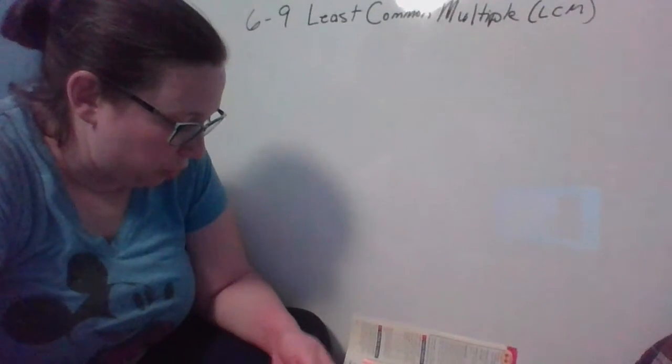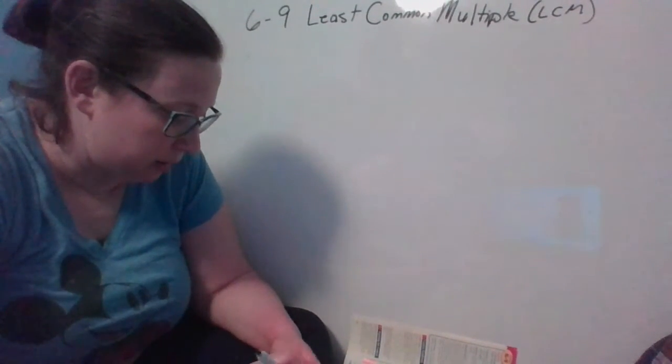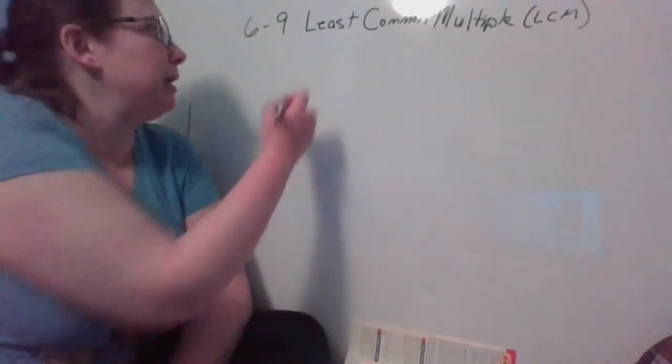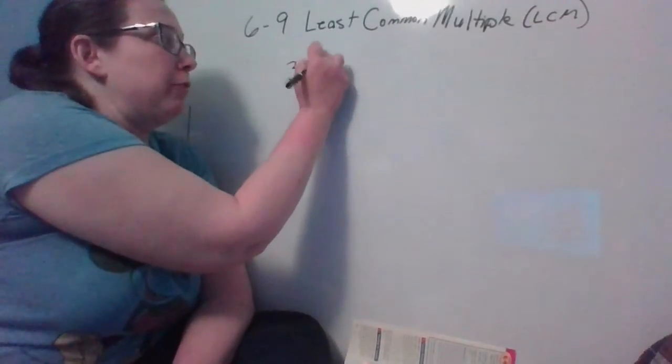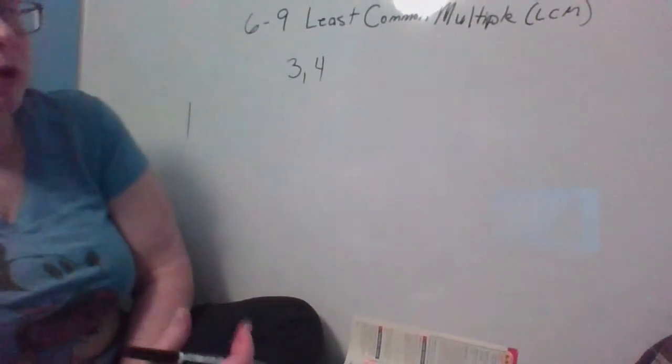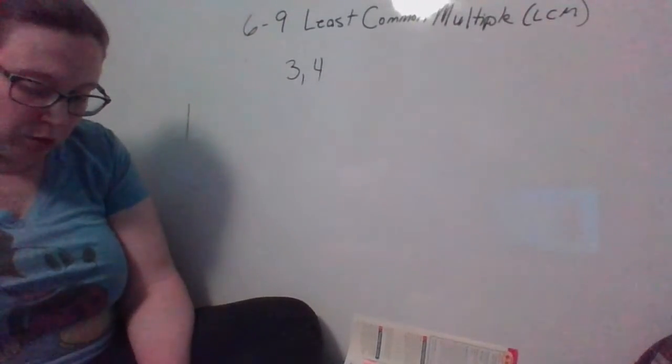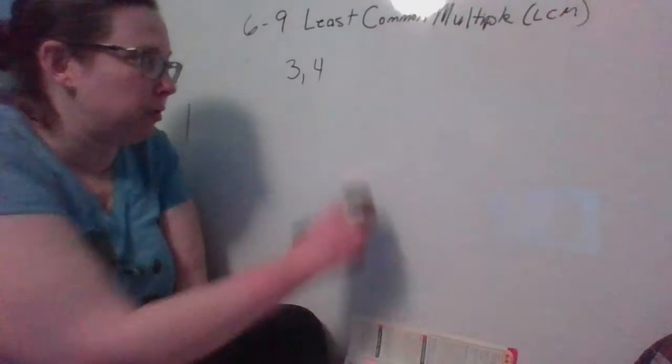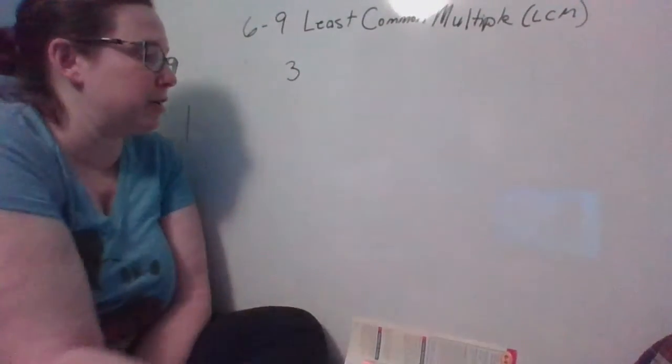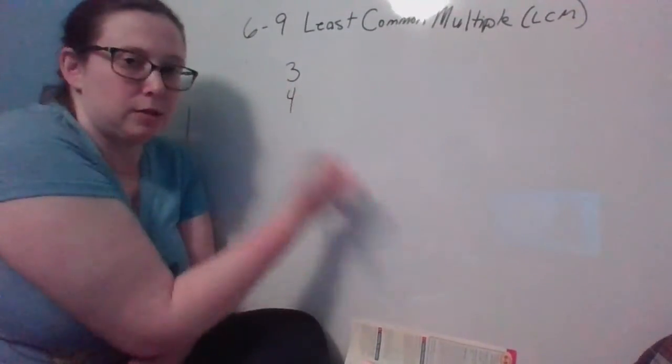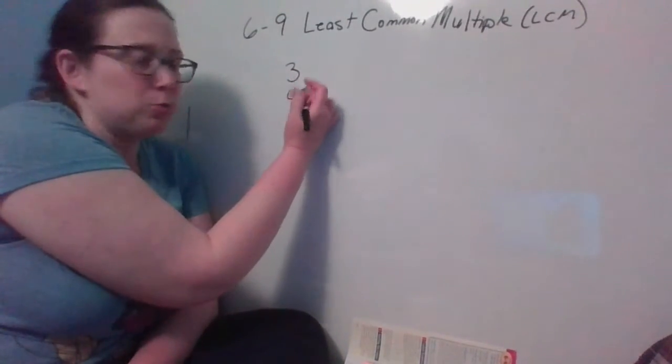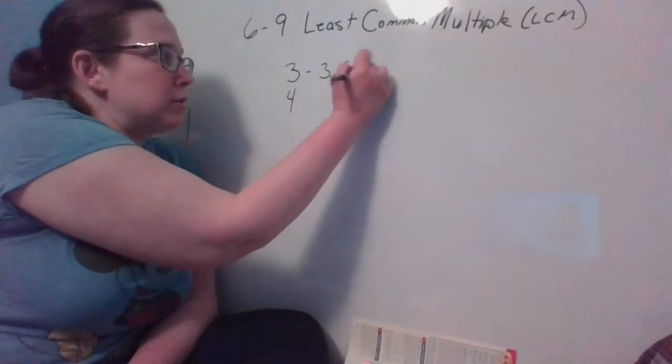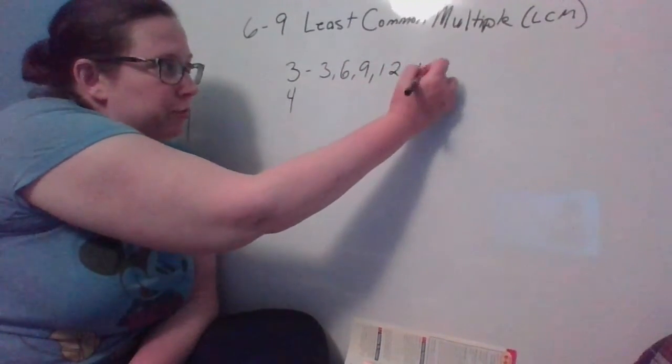When you are looking for a least common multiple or LCM, we are going to be given two numbers. Say we have 3 and 4. When you're given these two numbers you want to think about your multiples. Just like we did with greatest common factor you can list them out. The multiples of 3 are 3, 6, 9, 12, 15, 18.